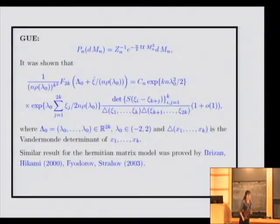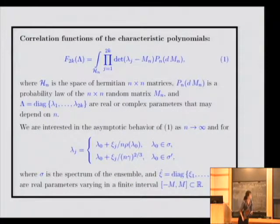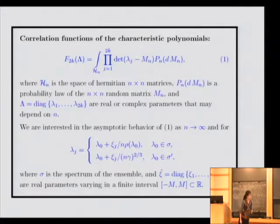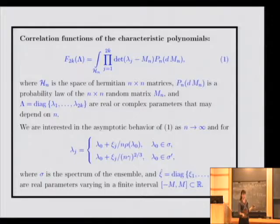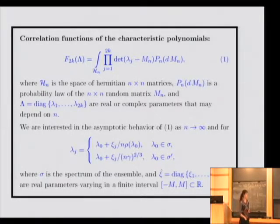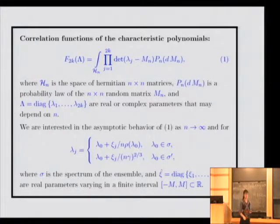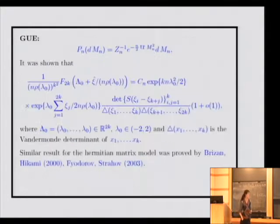So basically, you're going to compute the product of those determinants when the λ_i's are all very close to λ_0, which is in the middle of the spectrum. Yes, and I'm really interested in the asymptotic behavior of this function for such λ. And you want to see some reflections of universality? Yes, of course, I am talking about universality.